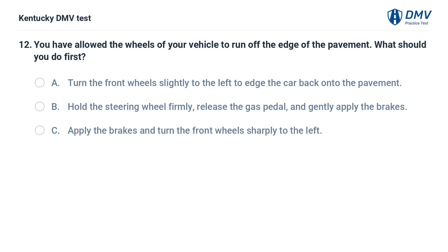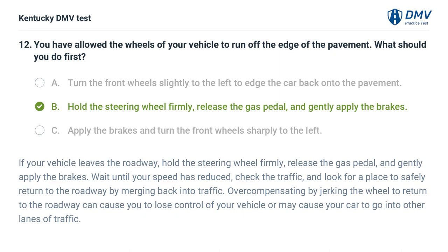You have allowed the wheels of your vehicle to run off the edge of the pavement. What should you do first? A. Turn the front wheels slightly to the left to edge the car back onto the pavement. B. Hold the steering wheel firmly, release the gas pedal, and gently apply the brakes. C. Apply the brakes and turn the front wheels sharply to the left. The correct answer is B. Wait until your speed has reduced, check the traffic, and look for a place to safely return to the roadway by merging back into traffic. Overcompensating by jerking the wheel to return to the roadway can cause you to lose control of your vehicle or may cause your car to go into other lanes of traffic.